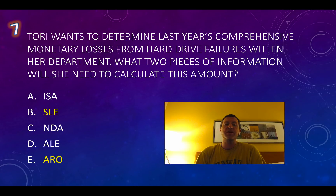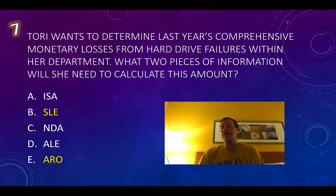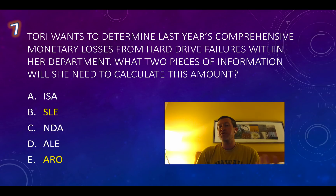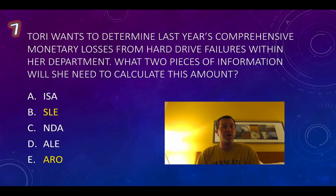Tori wants to determine last year's comprehensive monetary losses from hard drive failures within her department. What two pieces of information will she need to calculate this amount? If we are looking for the annual loss expectancy, we need two pieces of information: our single loss expectancy (SLE) — how much does each occurrence actually cost us — as well as our ARO, the annual rate of occurrence, meaning how often does this actually happen. When we take the average amount per occurrence and multiply it by the number of times it happens per year, this gives us our annual loss expectancy, or ALE. Make sure you know your acronyms for this exam, and I'll put a resource below where you can study those as well.